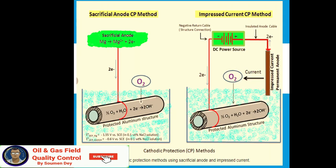What is the difference between sacrificial protection and cathodic protection? The main difference is that impressed current cathodic protection uses an external power source with inert anodes, while sacrificial anode cathodic protection uses the naturally occurring electrochemical potential difference between different metallic elements to provide protection.